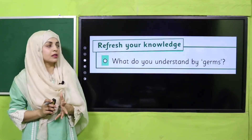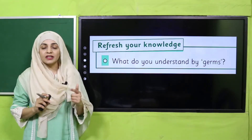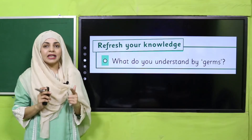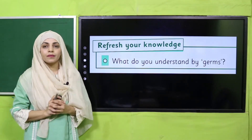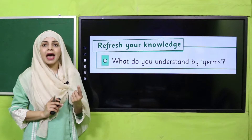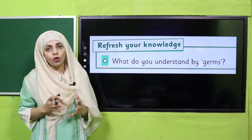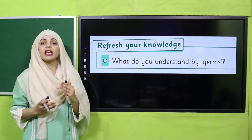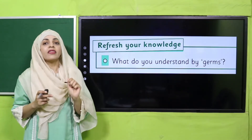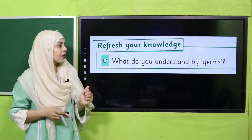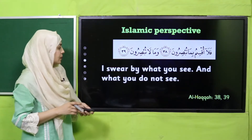Let's quickly refresh your knowledge. Answer this question: what do you understand by germs? Think quickly. Germs are very small living organisms and they cause diseases. Very nice. So germs are basically microorganisms, because you can't see them — they are so small that you can only see them with a microscope.